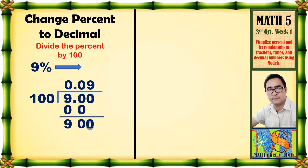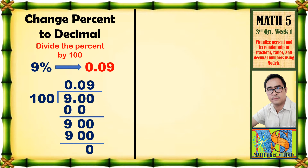Then, 9 times 100 is equal to 900. Let us subtract — it's equal to zero. So, the decimal form of 9 percent is 0.09.